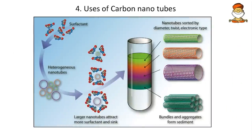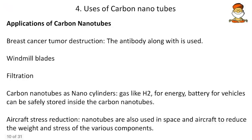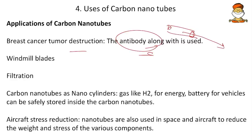Carbon nanotubes are essentially pipes made up of graphene. They can be made in multiple walls — multiple rings within a ring — forming carbon nanorods or nanotubes. One key use is breast cancer tumor destruction: an antibody is attached to the carbon nanotube, which then flows through the body, enters the blood, targets the tumor, and performs its action there.